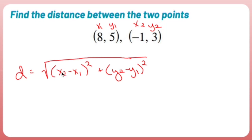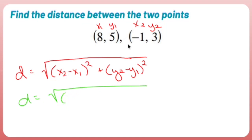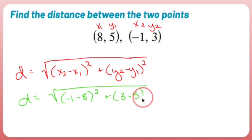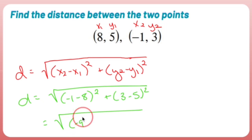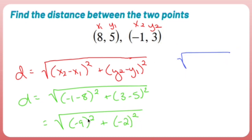So d equals the square root of: (x₂ minus x₁) squared plus (y₂ minus y₁) squared. x₁ = 8, x₂ = negative 1, y₁ = 5, y₂ = 3. Inside: negative 1 minus 8 is negative 9, squared is 81. Plus 3 minus 5 is negative 2, squared is 4. So d equals the square root of 85.